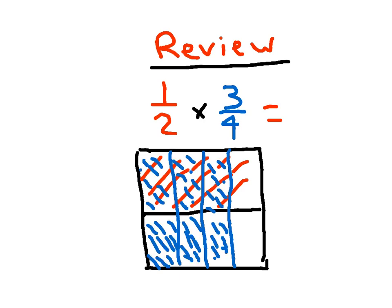Now for our product — the model is divided into 8 total parts. How many are shaded by two colors? 3. So 1 half times 3 fourths equals 3 eighths. Notice that 1 times 3 is 3, and 2 times 4 is 8 — so the area model matches what we'd get by multiplying numerators and multiplying denominators. That's using area models for multiplication of fractions.